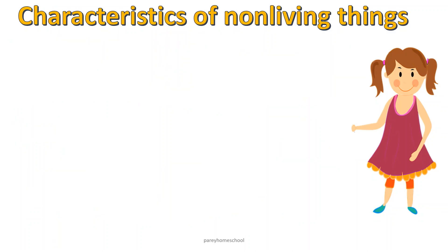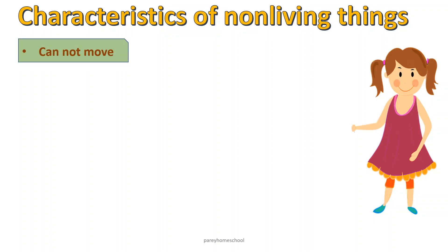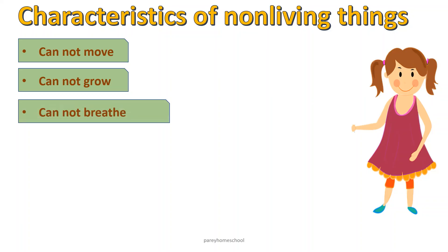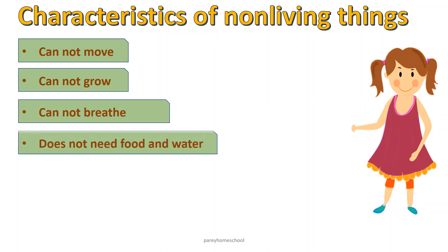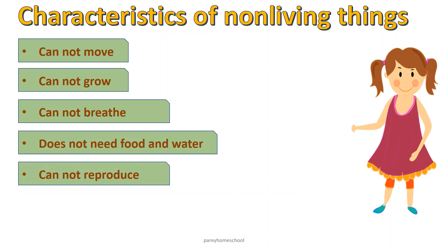Now we will see the characteristics of non-living things. Non-living things cannot move. Non-living things cannot grow. Non-living things cannot breathe. Non-living things do not need food and water. Non-living things cannot reproduce.